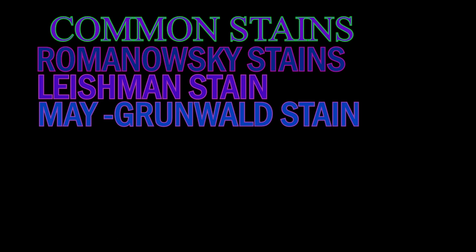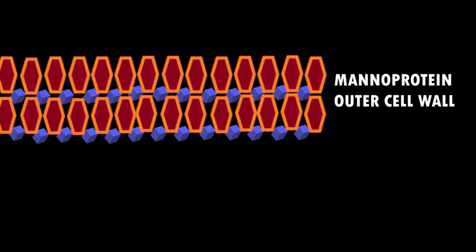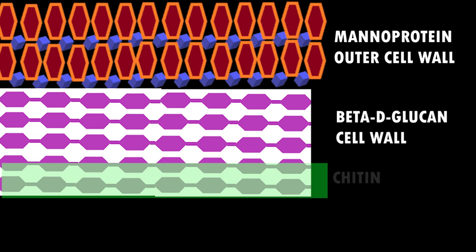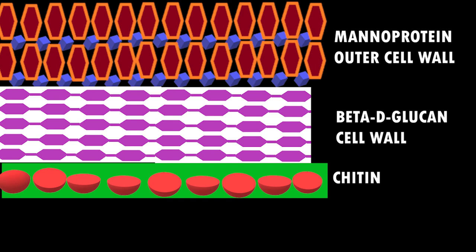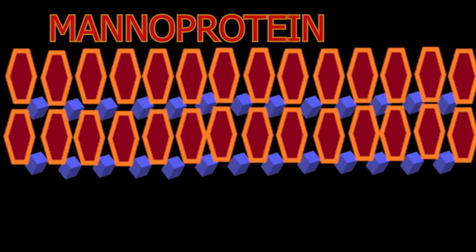The cell wall is the compartment that mediates all the relationships of the cell with the environment. It protects the content of the cell, gives rigidity, and defines the cellular structure. The cell walls are composed mostly of manoproteins and fibrous beta-1,3-glucan. There is also branched beta-1,6-glucan that links the other components of the wall.